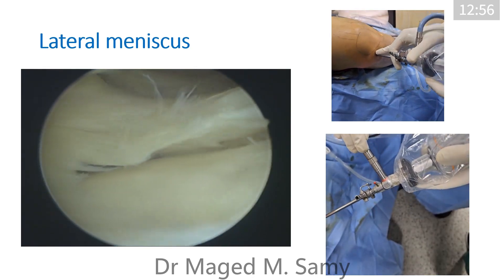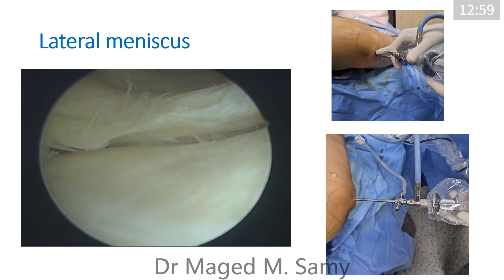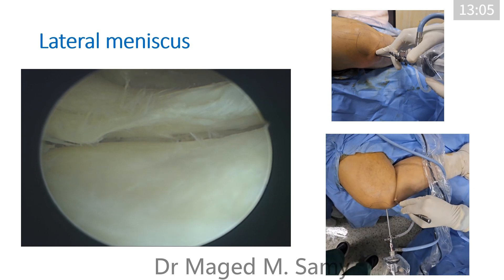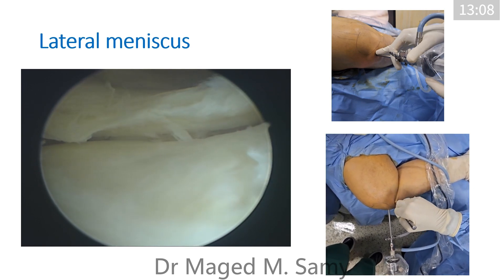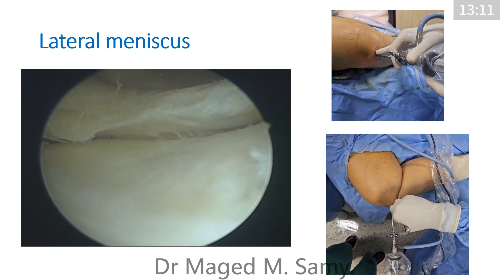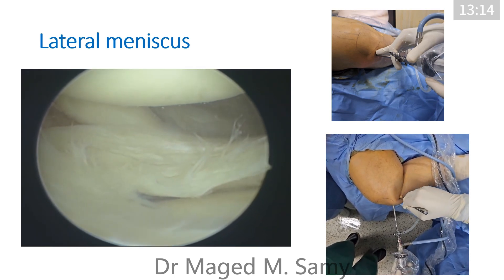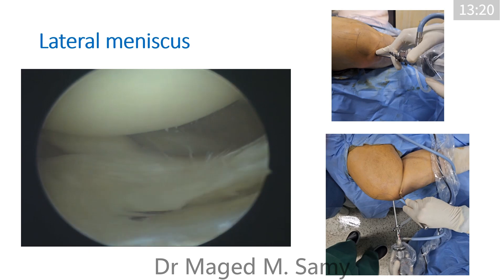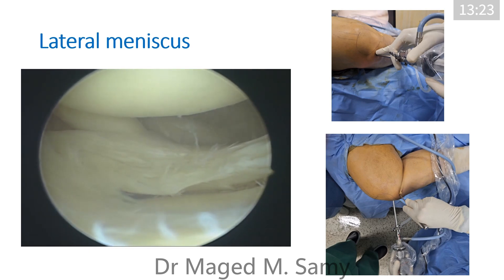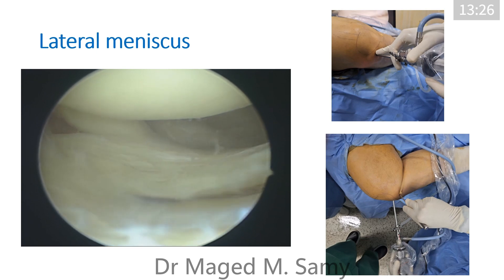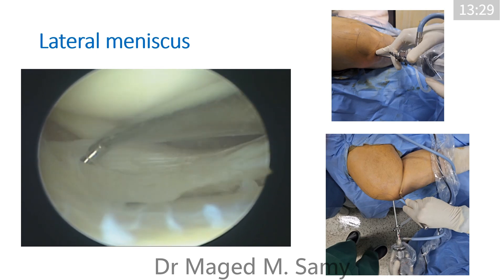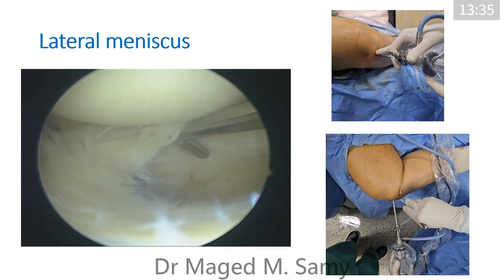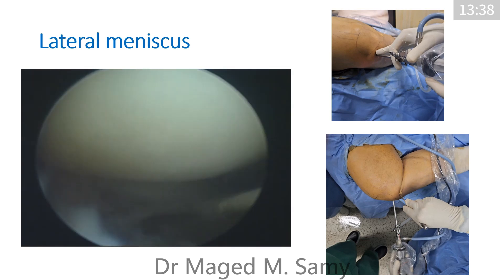Taking the figure-of-four position over the table opens the lateral compartment even wider and puts more varus stress on the knee, allowing you to see the whole lateral meniscus and clearly see the popliteus tendon. It's easier and wider, but if it's a heavy leg you may need an assistant. If working alone, it's easier to make the varus stress by pressing the lower leg against the edge of the table. You can clearly see the popliteus tendon, the lateral femoral condyle, the tibial plateau, and the whole meniscus for palpation.